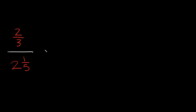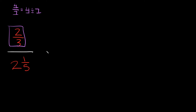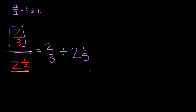So here we have two-thirds divided by two and one-fifth. Where do you even start with this? Your first step is just going to be writing out this division problem. For example, if we had a fraction like four over seven, we could rewrite it as four divided by seven — the numerator divided by the denominator. We're going to apply that same logic here, so this equals two-thirds divided by two and one-fifth.